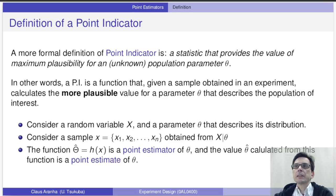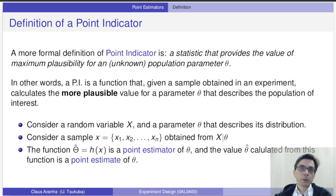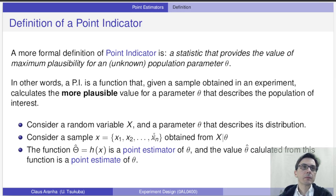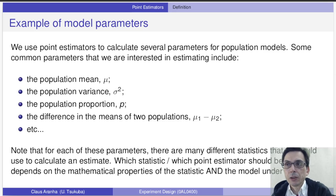Let's say that we have a model m and we have a parameter theta in this model — for example, the mean height of students in the university. A point indicator will calculate an estimate for this parameter from the data that we obtained in our experiment. We say that theta hat is an estimation of the parameter theta for the population x.